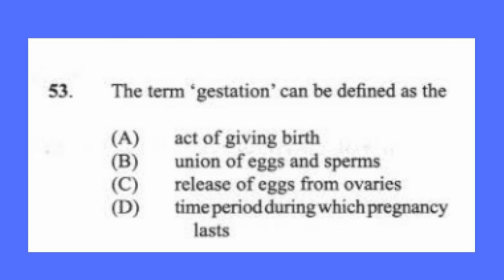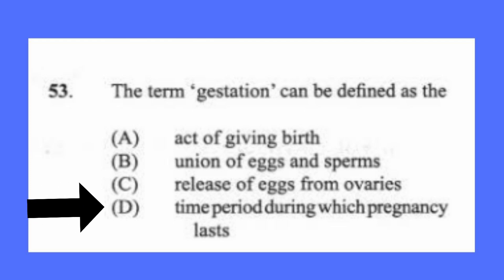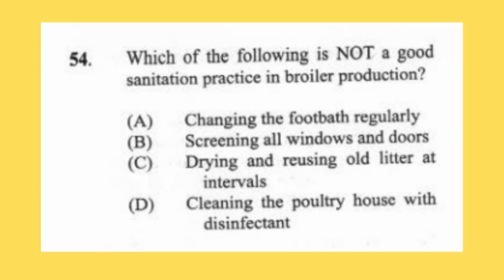Question 53: The term gestation can be defined as the (a) act of giving birth, (b) union of eggs and sperms, (c) release of eggs from ovaries, (d) time period during which pregnancy lasts. The answer is D, time period during which pregnancy lasts.